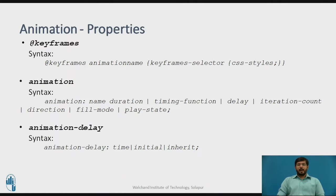The syntax for keyframe is @keyframe followed by the animation name, which can be anything of the user's choice. Inside the brackets, you specify the CSS style for that animation. The second property is animation — its syntax is: animation: name, duration, timing-function, delay, iteration-count, direction, fill-mode, and play-state. It is not mandatory that all properties be defined. If you only want to define duration and delay, you can specify just those and leave others blank, ending with a semicolon.